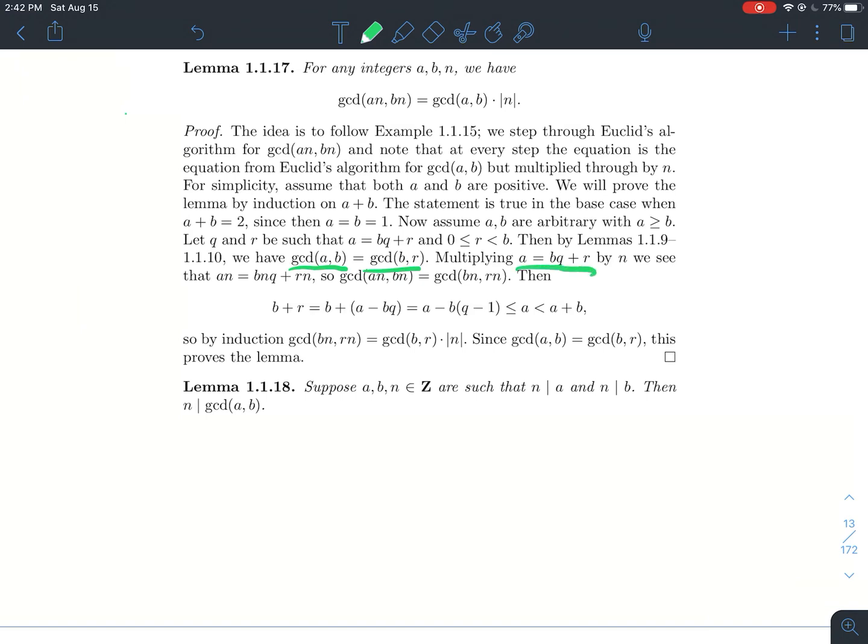Now what we'll do is take our equation a is equal to b times q plus r, multiply that through by this number n. So everybody gets an n in this line here. Everybody just got an n and now we'll think about our GCD stuff again. The GCD of an and bn has to be the same thing as the GCD of bn and rn.